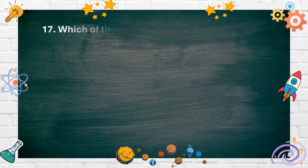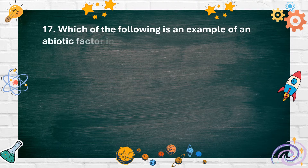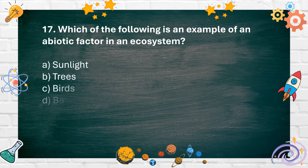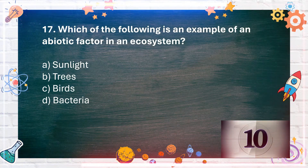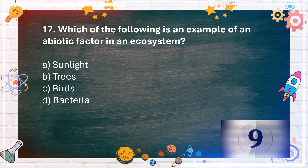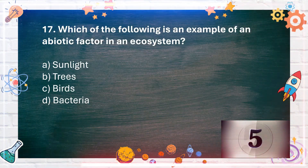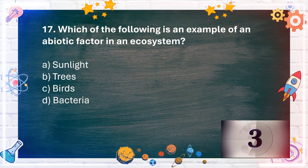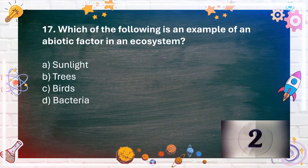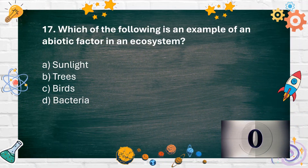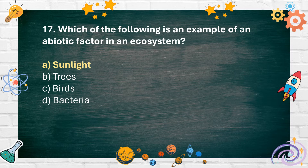Number 17. Which of the following is an example of an abiotic factor in an ecosystem? A. Sunlight. B. Trees. C. Birds. D. Bacteria. The answer is A. Sunlight.